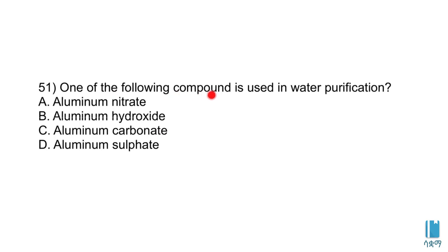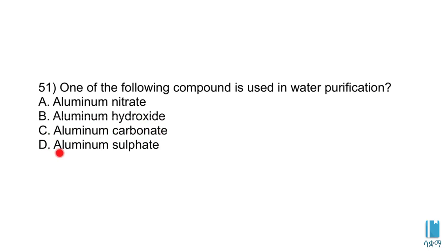One of the following compounds is used in water purification. The options are: A - aluminum nitrate, B - aluminum hydroxide, C - aluminum carbonate, D - aluminum sulfate.